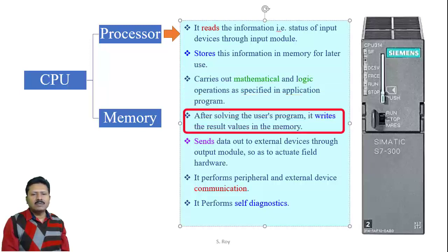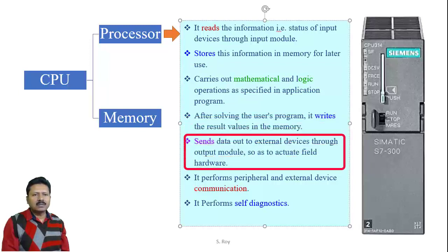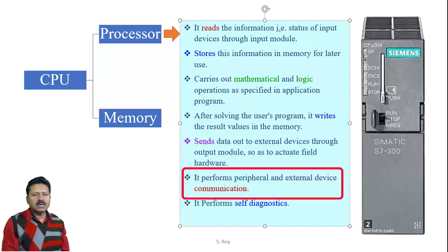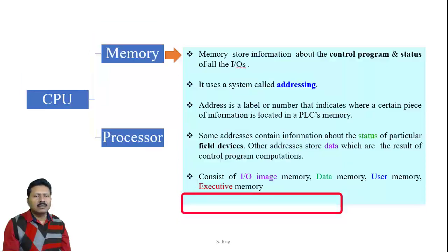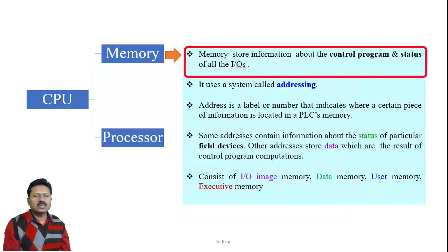After execution of the user program, the processor writes the result values in memory, then sends data to external devices through the output module, by which output hardware are actuated. The processor also performs communication with different external peripherals and external devices, and has the facility of self-diagnostics — it checks whether there is any hardware or software fault in the PLC.